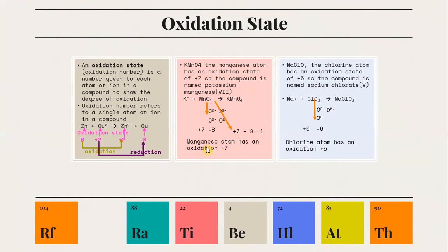The second example is NaClO3. The chlorine atom has an oxidation state of +5, so the compound is named sodium chlorate(V). Na+ combines with ClO3− to form NaClO3. Oxygen is repeated 3 times, giving a total of −6. So the oxidation state for chlorine plus −6 equals −1, meaning chlorine has an oxidation state of +5, since +5 + (−6) = −1.